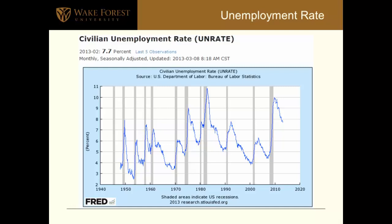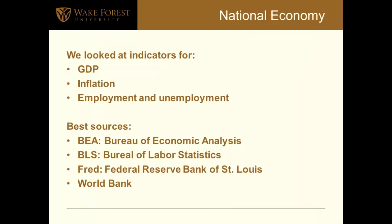Here is a FRED chart showing the civilian unemployment rate, currently at 7.7%. The gray bars show periods of recession — look how unemployment jumped steeply during the 2008–2009 recession, and now it's falling, which is a good thing. To summarize the national economy section, we've looked at GDP, inflation, employment, and unemployment. The best sources were the Bureau of Economic Analysis, the Bureau of Labor Statistics, the Federal Reserve Bank of St. Louis's FRED database, and the World Bank.